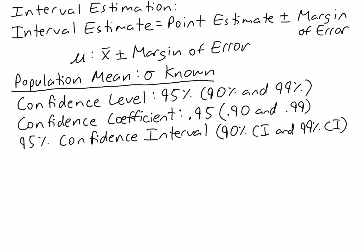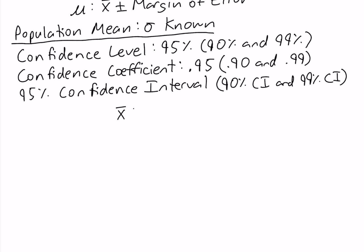The formula for constructing an interval estimate of the population mean when sigma is known is x-bar, the sample mean, plus and minus z alpha/2 times sigma, the population standard deviation, divided by the square root of n, the sample size. Typically, when computing an interval estimate of the population mean, we're given the sample mean, the population standard deviation, and the sample size. So all we're left to find is z alpha/2, which is what we'll discuss now.